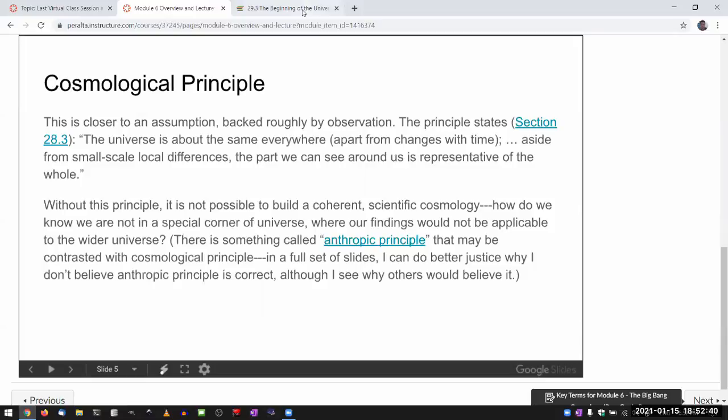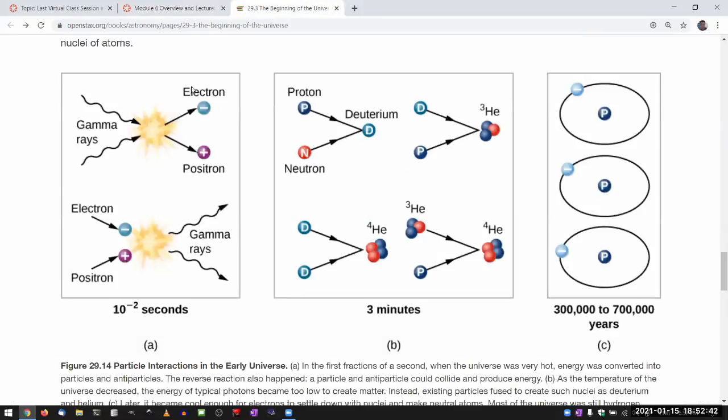And the cosmological principle says the universe is about the same everywhere. And what we would really like to be able to say is to extend that to everything. There isn't really anything special about our universe. There isn't anything special about the initial starting conditions of the universe. So if we say that we have an imbalance of matter and antimatter because that's just how things are, that's kind of a violation of that principle.